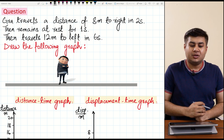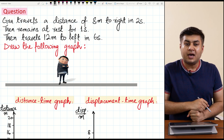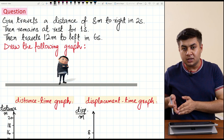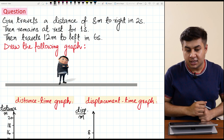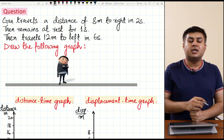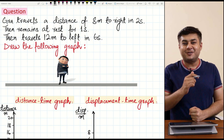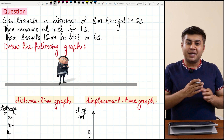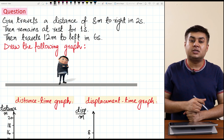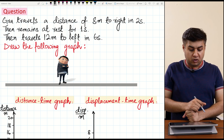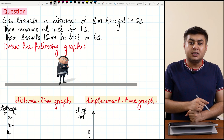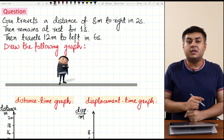Assalamu alaikum dear students, welcome to the Slate class of physics. We are doing the chapter of kinematics. In the previous videos we completed the concepts of distance and displacement, speed and velocity. Distance is a scalar quantity, displacement is a vector quantity, speed is a scalar quantity, and velocity is a vector quantity. The sign of velocity explains the direction of motion of an object. Now we move on to the graphs of distance, displacement, speed, and velocity with respect to time.